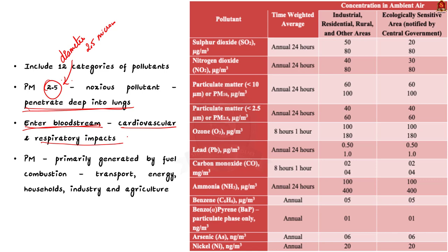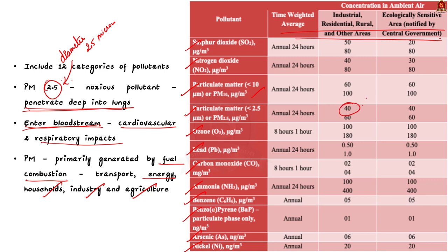Particulate matter is primarily generated by fuel combustion from sectors like transport, energy, households, industry, and agriculture. The 12 pollutants in the revised NAAQS include PM10, PM2.5, nitrogen dioxide, sulfur dioxide, carbon monoxide, ozone, ammonia, lead, benzene, benzopyrene, arsenic, and nickel. The acceptable annual limit for PM2.5 is 40 micrograms per cubic meter and for PM10 is 60 micrograms per cubic meter. Pause and go through the pollution standards for all 12 pollutants shown in the table.